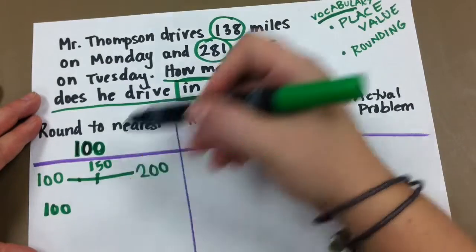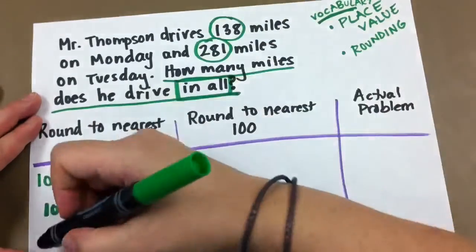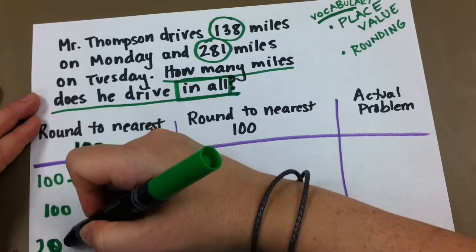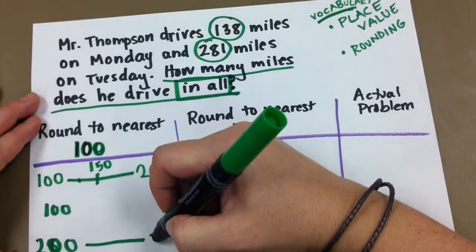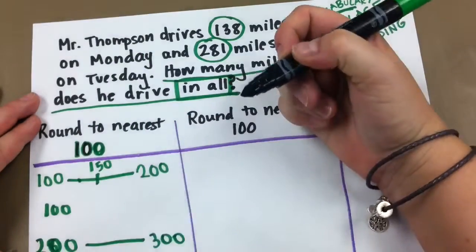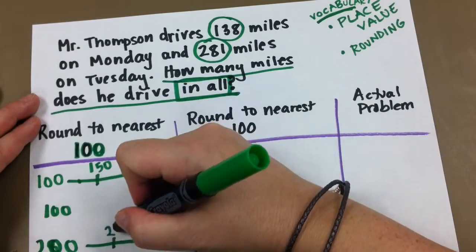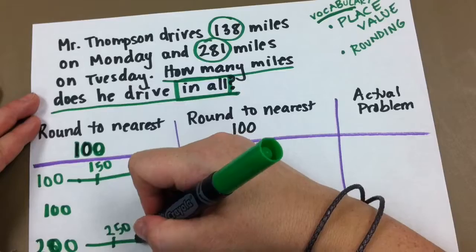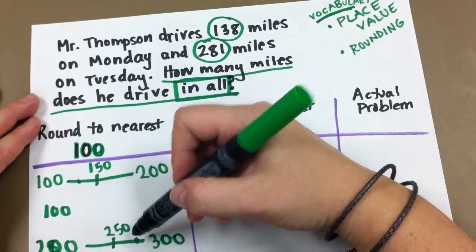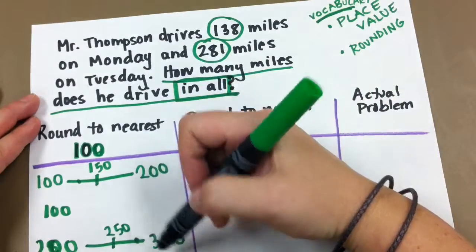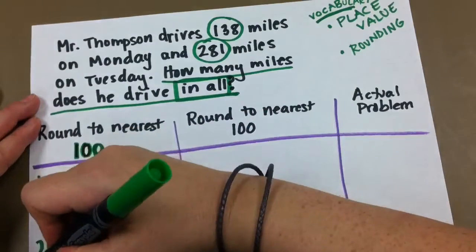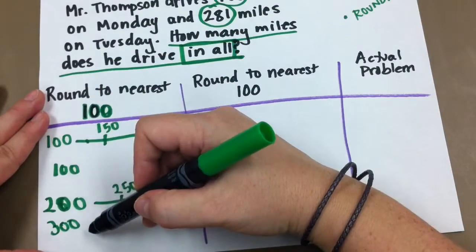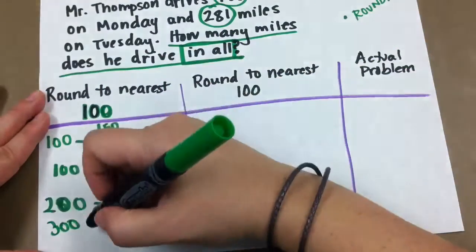138 rounds to 100. Now let's look at 281. Okay, so 281, the 200s that it's in between is 200 and 300. And boys and girls, what's the middle point? 250. Now 281 is larger than that. It's somewhere around here. So 281 rounds to 300. So we are going to add 100 plus 300, and that's going to get us 400.